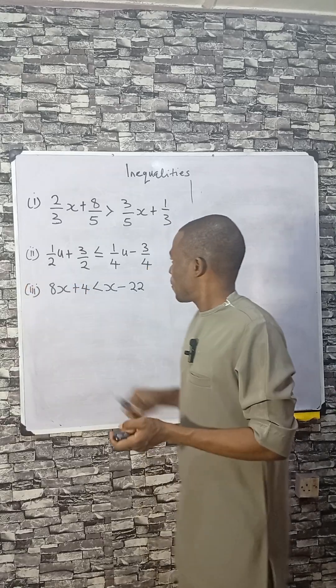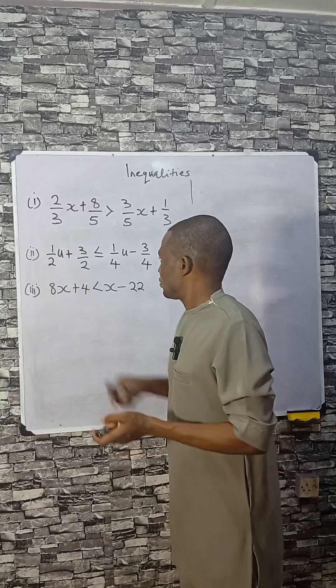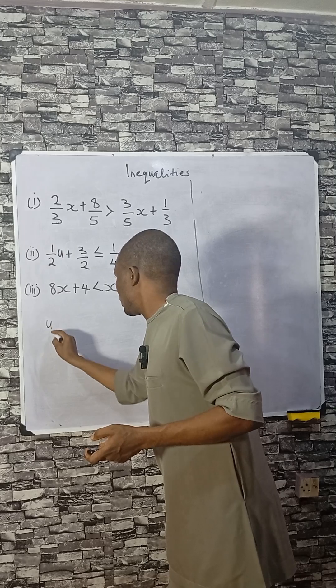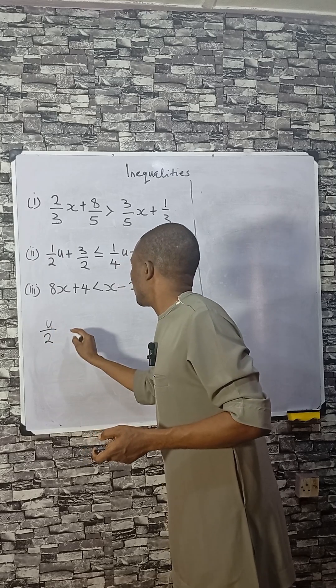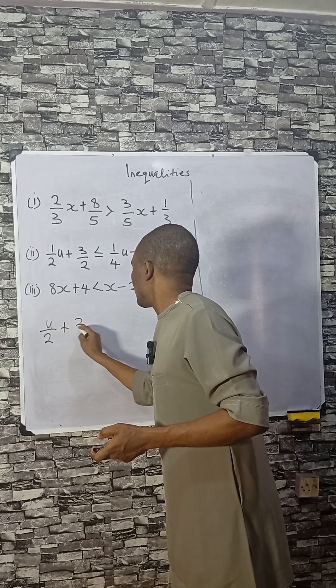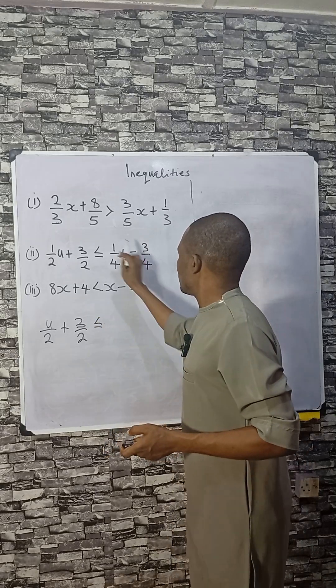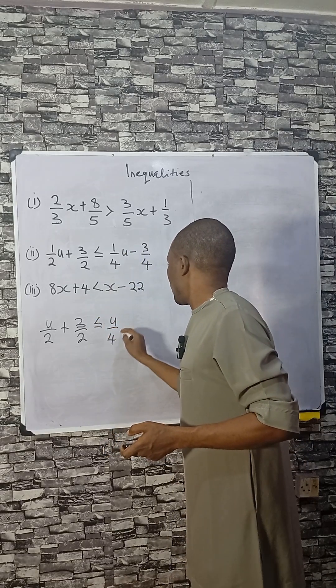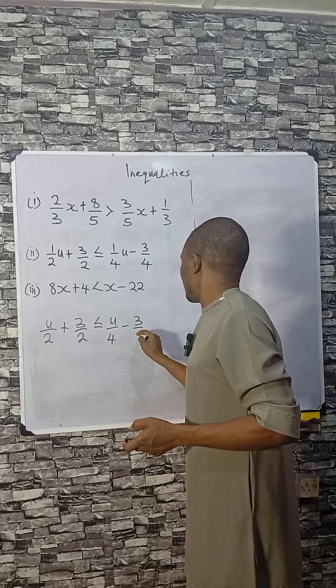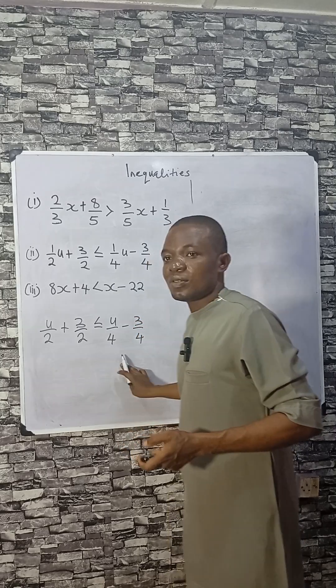Let's consider number 2. That is u/2 + 3/2 less or equal to u/4 - 3/4. So the LCM here is 4.